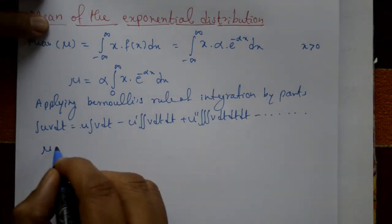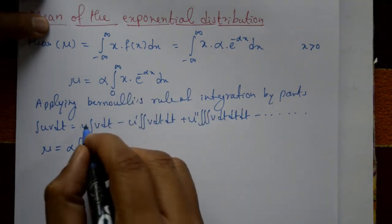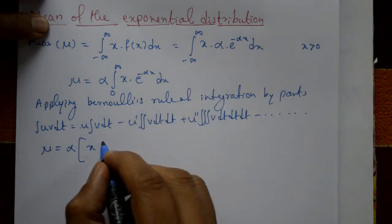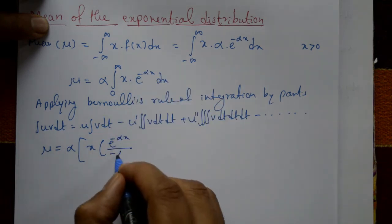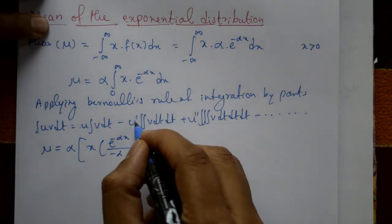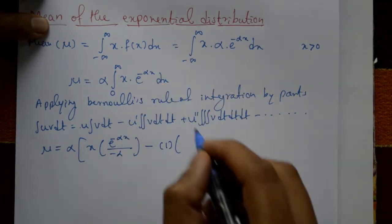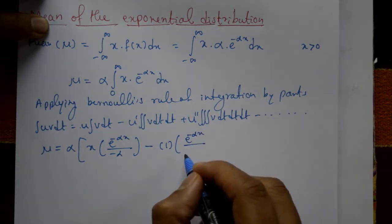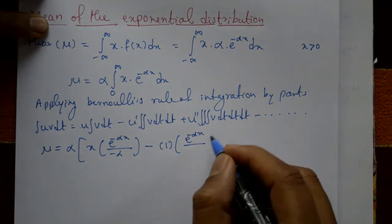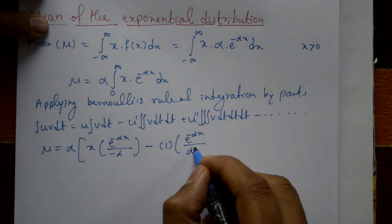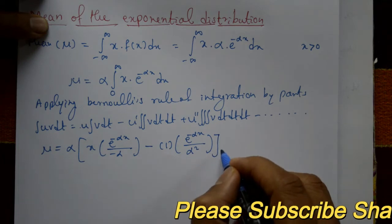Here u = x and v = α·e raised to minus αx. Applying Bernoulli's rule: x as it is, multiplied by the integration of e raised to minus αx which gives e raised to minus αx divided by minus α; minus u′ (which is 1) times the double integration, giving e raised to minus αx divided by α squared — with limits zero to infinity.